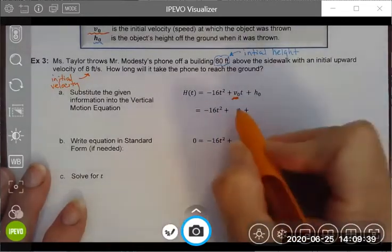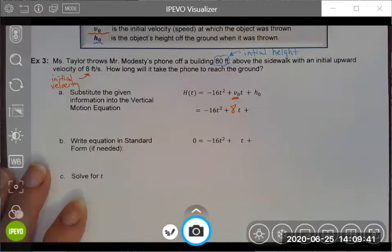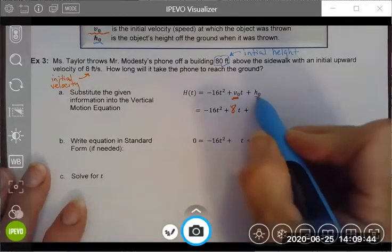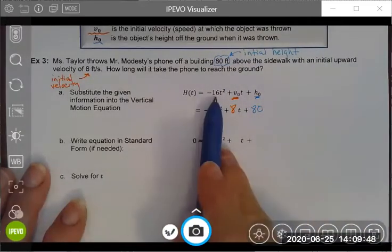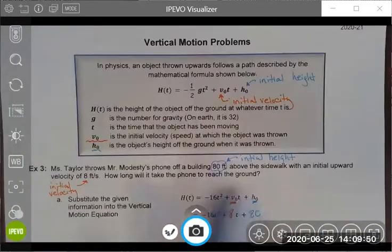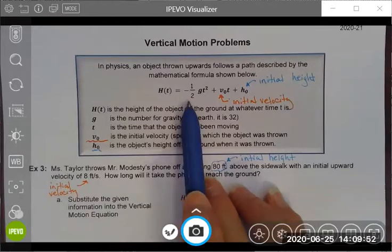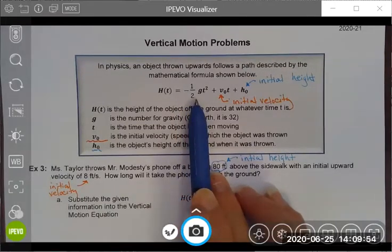My initial height can be substituted with 80 feet, and I'll notice that in my generic formula it's negative one-half. We're on Earth, that would be negative one-half of 32, and that's where the negative 16 comes from.